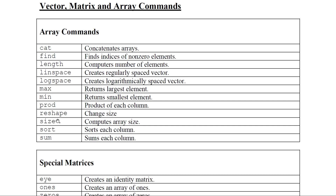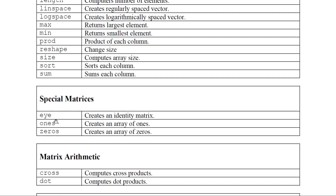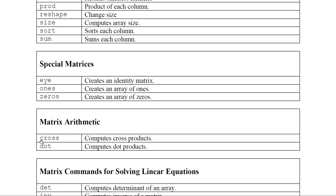size returns the size of an array. sort sorts each column. sum computes the sum of each column. Special matrices: eye creates an identity matrix; ones creates an array of ones; zeros creates a matrix of all zeros. You can also compute the dot product and cross product using the dot and cross commands.